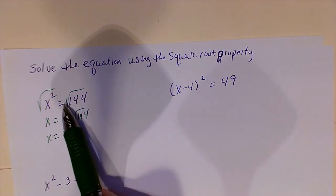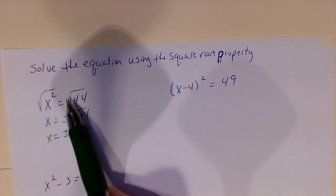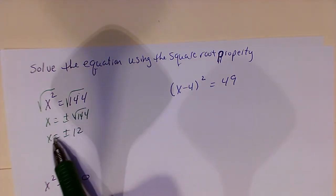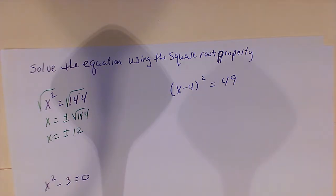And whenever you introduce the radical at this point, you're going to do the plus or minus. So x will equal plus or minus 12, and that's all you have to do.